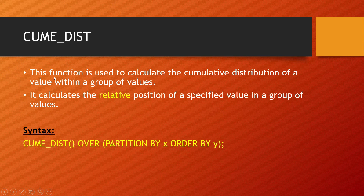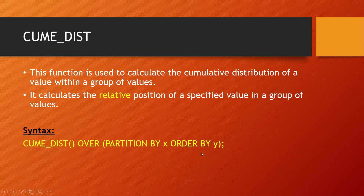Cumdist. This function is used to calculate the cumulative distribution of a value within a group of values. It calculates the relative position of a specified value in the group. The syntax is: CUMDIST() OVER (PARTITION BY ... ORDER BY ...).